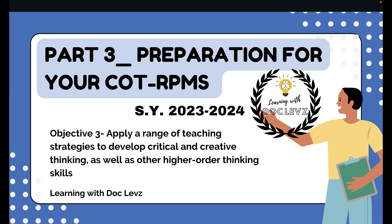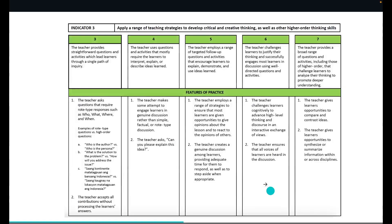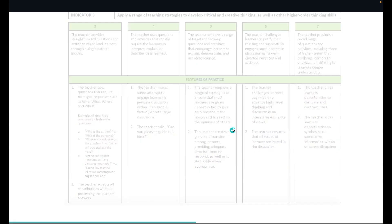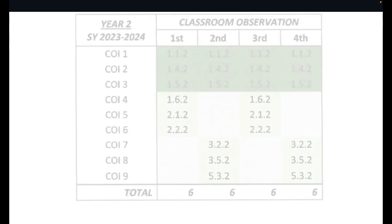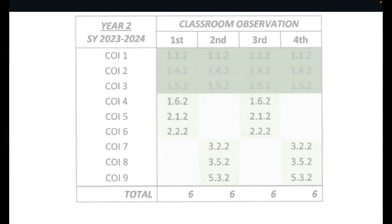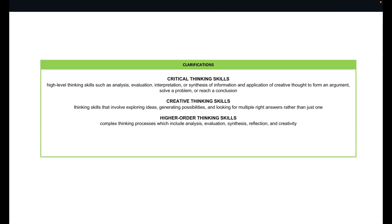Looking at Objective 3, it states here: apply a range of teaching strategies to develop critical and creative thinking, as well as other higher-order thinking skills. That is for Indicator 3 — we have to master this because for the next four grading periods, we need to apply Classroom Observable Indicator 3. So to help us really understand this, let's go straight to the clarifications.